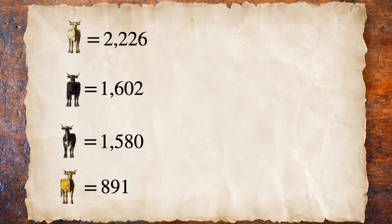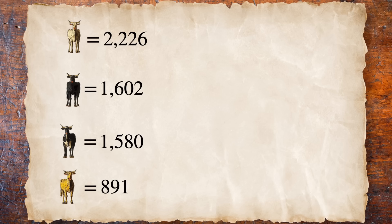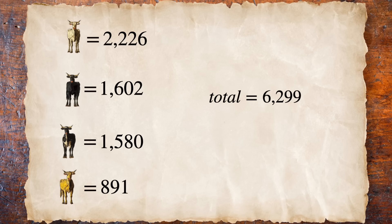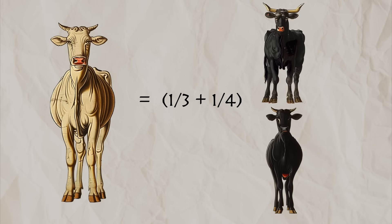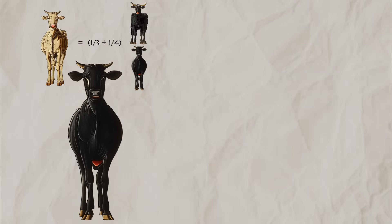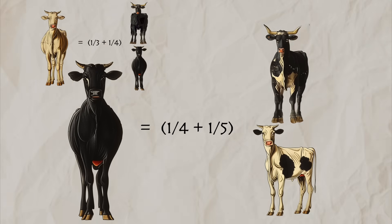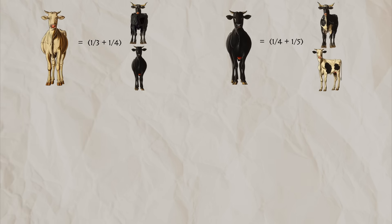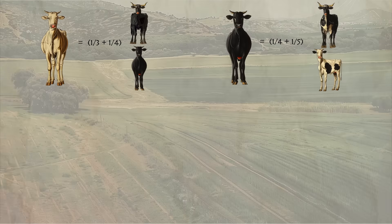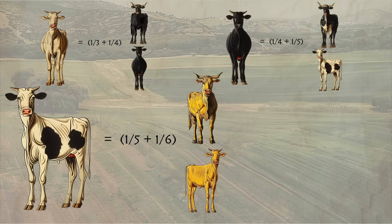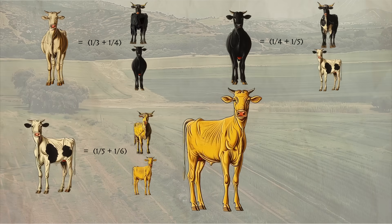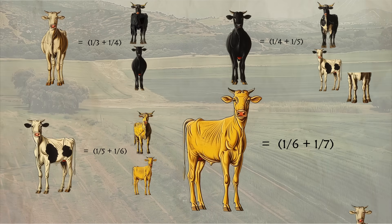We haven't counted the female cows yet, but at the moment we're looking at about 6,300 bulls. The poem continues: These were the proportions of the cows. The white were precisely equal to the third part and a fourth of the whole herd of the black, while the black were equal to the fourth part once more of the dappled, and with it a fifth part, when all, including the bulls, went to pasture together. Now, the dappled in four parts were equal in number to a fifth part and a sixth of the yellow herd. Finally, the yellow were in number equal to a sixth part and a seventh of the white herd.